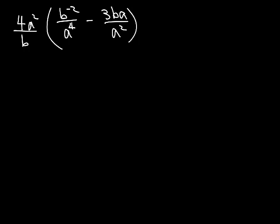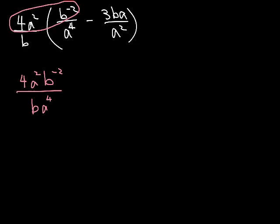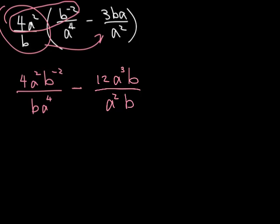So 4a squared times b to the negative 2. You can't do anything except just combine those. You can't multiply a squared times b to the negative 2 and get something. They just get squished together there. And the same with your bottom. We have ba to the 4th. Now we're going to multiply this whole thing times this whole thing. We bring the sign with it because this is going to be a positive times a negative, which is going to give you negative there. And we multiply 4 times 3 is 12. We have an a squared times a, which means you add your exponents. And the b doesn't have anything to hang out with, so it's just going to stay the way it is. And we're going to put that over a squared b.